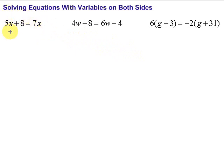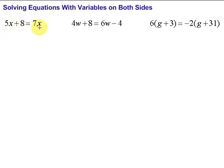Let's take a look at this first example. We have 5x plus 8 equals 7x. I have x here and x over here — I need to get them all together. Let's get rid of the 5x. The reason is it's grouped with something else, while this x is all by itself. If I bring the 7x over here, I'd have to deal with the extra term. You want to get the variable as close to by itself as possible, as quickly as possible.